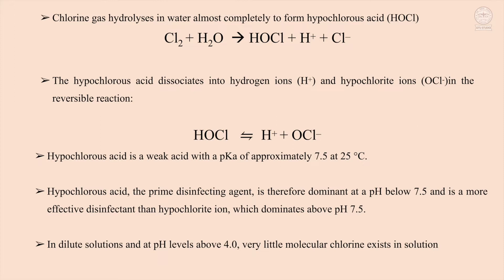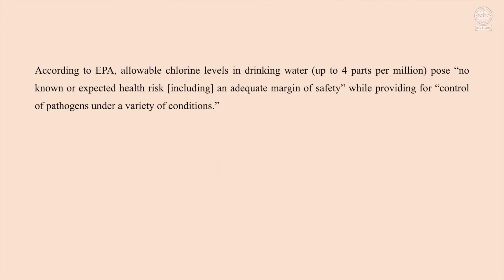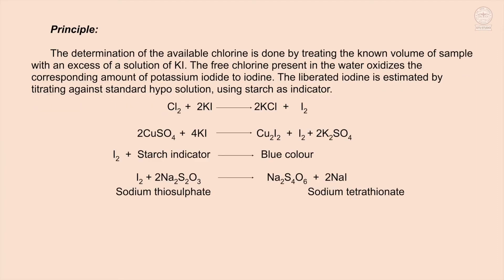According to the U.S. Environmental Protection Agency (EPA), allowable chlorine levels in drinking water up to 4 parts per million pose no known or expected health risk, including an adequate margin of safety, while providing for control of pathogens under a variety of conditions. Principle: The determination of available chlorine is done by treating the known volume of sample with an excess of potassium iodide (KI) solution.